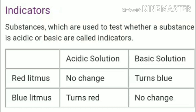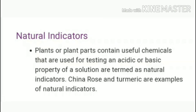Next: indicators. Indicators are substances which are used to test whether a substance is acidic or basic. Indicators se pata chalta hai ye substance acidic hai ya basic hai. We have two types of indicators: natural indicators and synthetic indicators, depending on the changing of their colors.